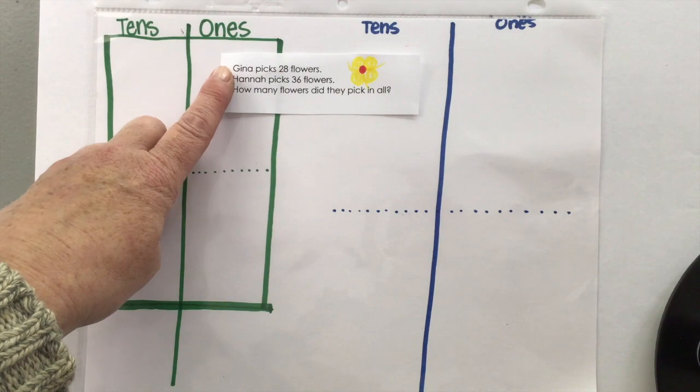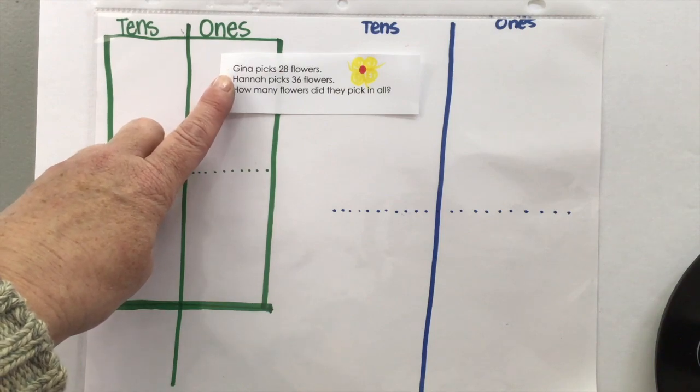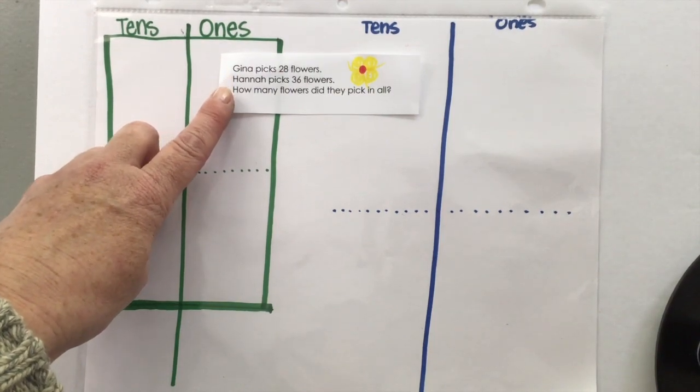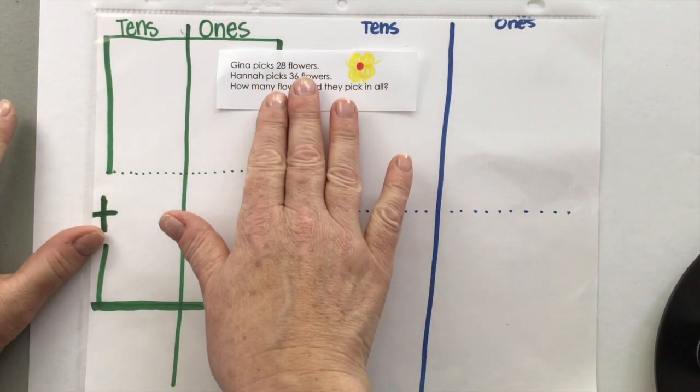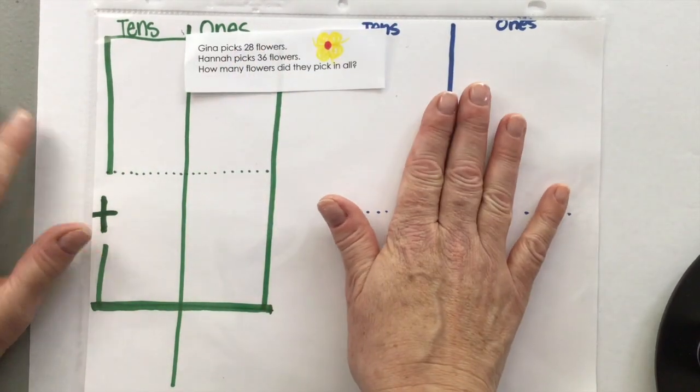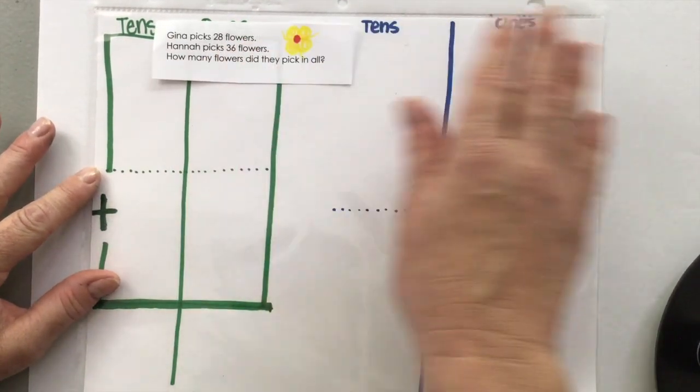Here's our story problem. Gina picks 28 flowers. Hannah picks 36 flowers. How many flowers did they pick in all? All right. So we're going to use the strategy of build it. So on this side of our place value board, we're going to build it.